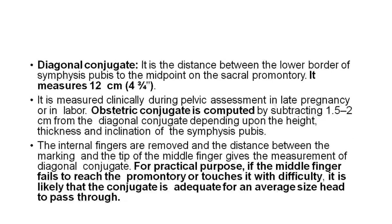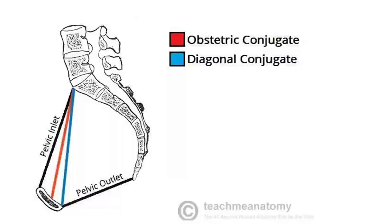For practical purposes, if the middle finger fails to reach the promontory or touches it with difficulty, it is likely that the conjugate is adequate for an average-size head to pass through. The red line in the picture shows the obstetric conjugate and the blue line shows the diagonal conjugate.